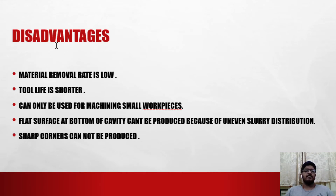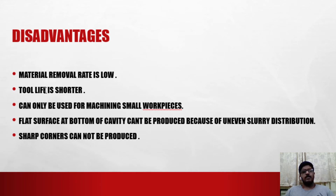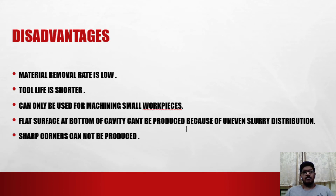The disadvantages of ultrasonic machining are: the material removal rate is low, because the amplitude is very low — in the range of 0.125 millimeters. Tool life is short because the tool is always in up-down vibration motion and always in contact with abrasive particles in the slurry. It can only be used for machining small workpieces, like coins. Flat surfaces at the bottom of a cavity cannot be produced properly because of uneven slurry distribution, and because of that, sharp corners cannot be produced properly either.